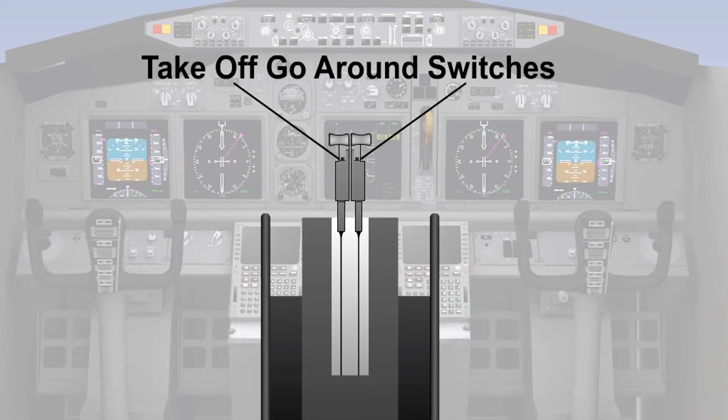It would be normal for this type of aircraft to use the autothrottle to manage the thrust for the take-off, climb, cruise, descent, and approach, up to the point the pilot takes control for a visual landing. If an autoland is being carried out, then the autothrottle will remain engaged up to the point of touchdown.